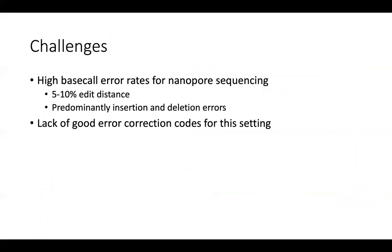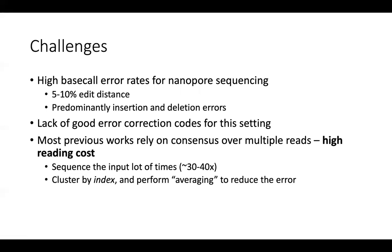There are a lot of challenges, especially with nanopore sequencing. The error rates are really high — five to ten percent — and they are insertion and deletion errors mostly, which makes it very difficult because there is a lack of good error correction codes for this setting, especially considering that we have very short sequences, so you can't use large block codes. Most previous works just do something called consensus, which means you read the sequence many times. You can cluster the sequences according to their index and perform some sort of averaging, which reduces the error. But this is very inefficient — similar to repetition coding, which we know is not the best way to do things.